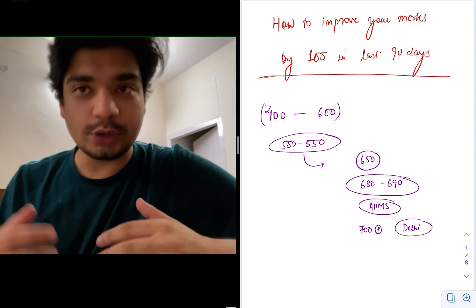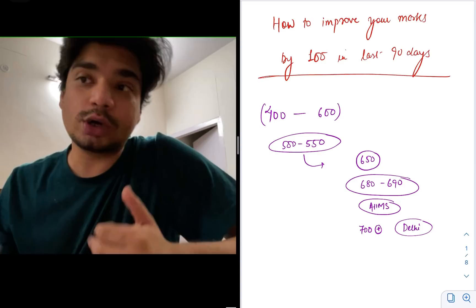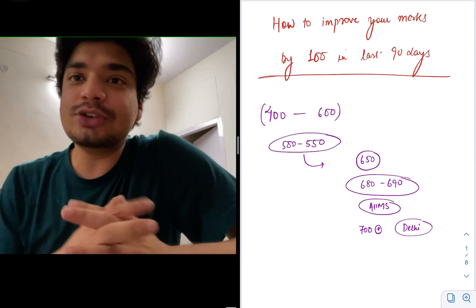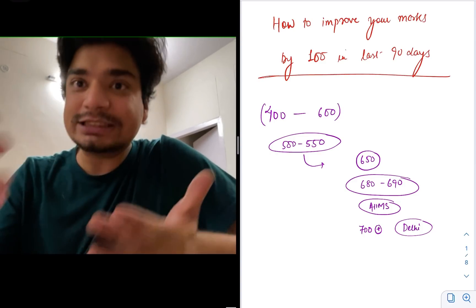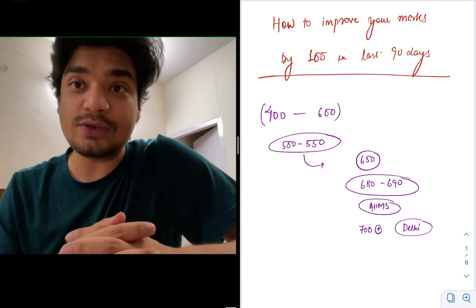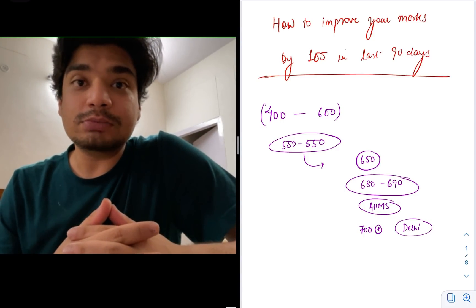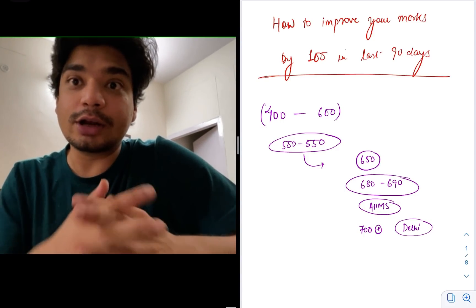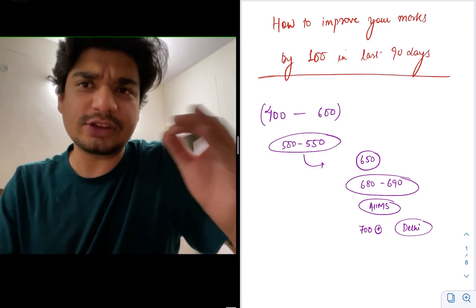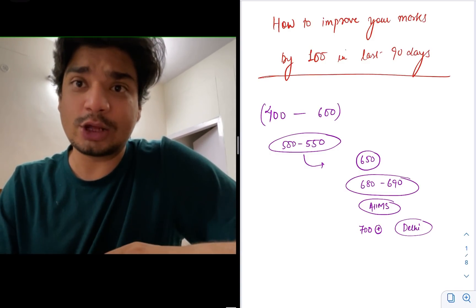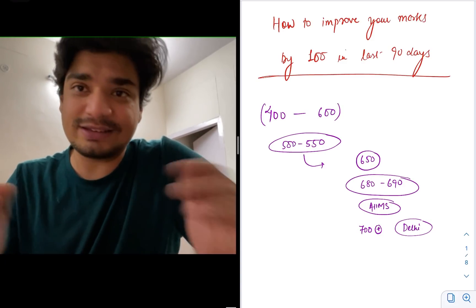We have a lot of students who got marks in the range of 400 to 600. Especially the students who got marks between 500 to 550 are now hoping that if they can increase their marks by 100 or 120, 130, they will get to that magical number of 600 which ensures a government medical college seat, at least by state quota in most states.